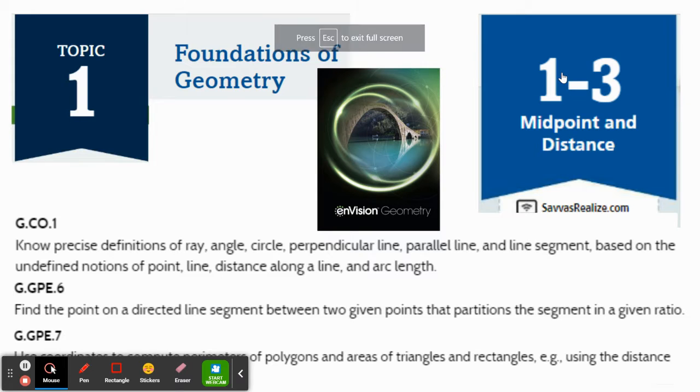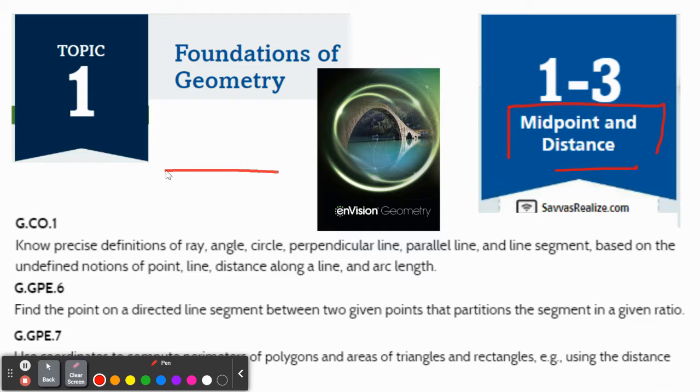All right. Hello, Geometry. Welcome to Lesson 3 of Topic 1. We are going to talk about midpoint and distance. This is very much a coordinate plane involved section. So let's just recap what the coordinate plane is. Remember, the coordinate plane is made up of two axes, a horizontal one called the x-axis because x goes left and right, and a vertical axis called the y-axis because y goes up and down.